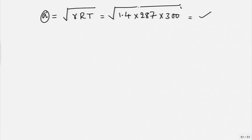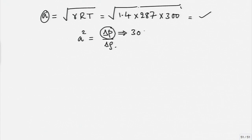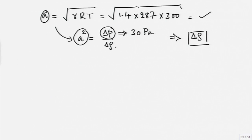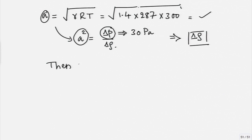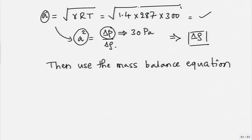That is the first part. If you recall, we had A squared equal to delta P divided by delta rho — this was our expression obtained earlier. This delta P is given as 30 Pascal and A squared is something we can find as above. Therefore, the first thing you can determine is the change in density, delta rho. Then use the mass balance equation, which will give you delta V equal to A times delta rho divided by rho.